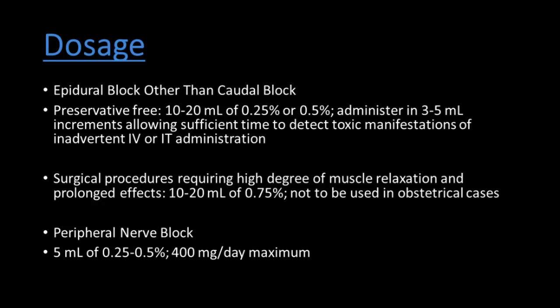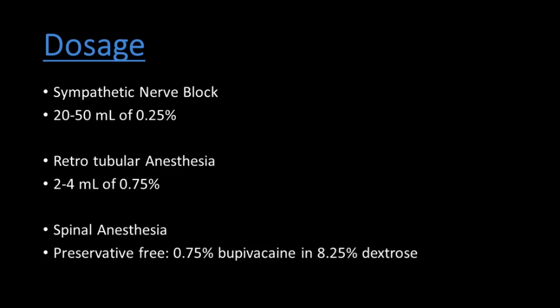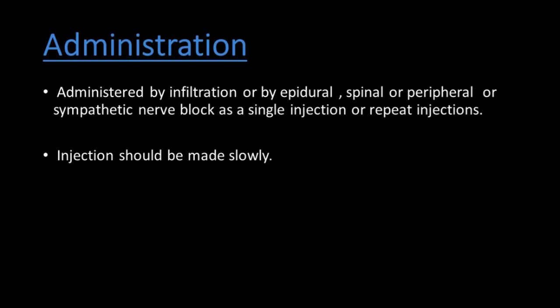Surgical procedures requiring high degree of muscular relaxation: 10 to 20 ml of 0.75%. Peripheral nerve block: 5 ml of 0.25% to 0.5%, maximum dose 400 mg per day. Sympathetic nerve block: 20 to 50 ml of 0.25%. Retrobulbar anesthesia: 2 to 4 ml of 0.75%. Spinal anesthesia: 0.75% in 8.25% dextrose.